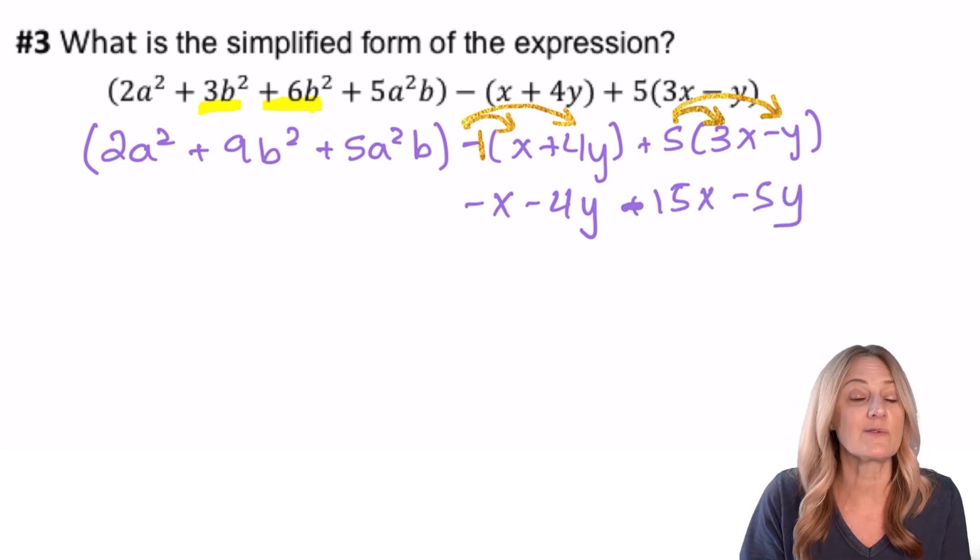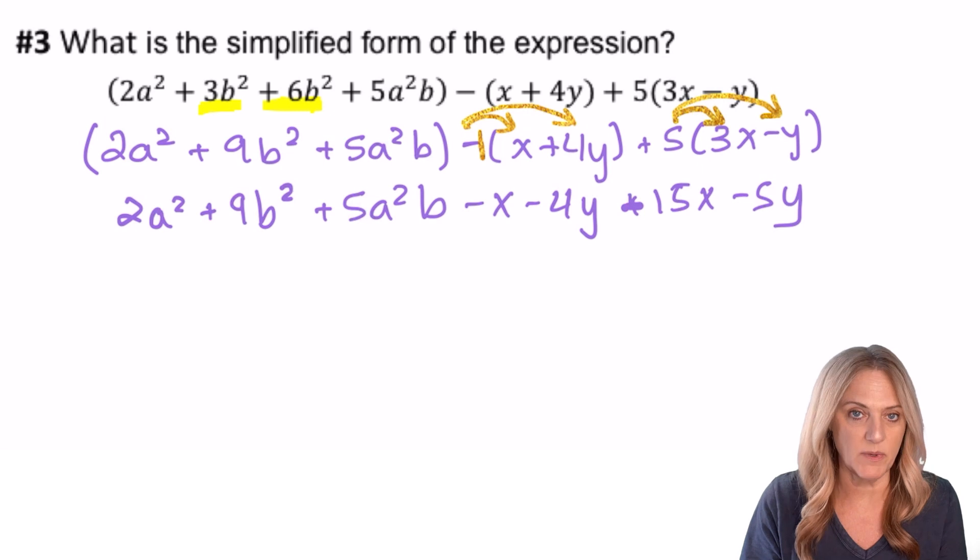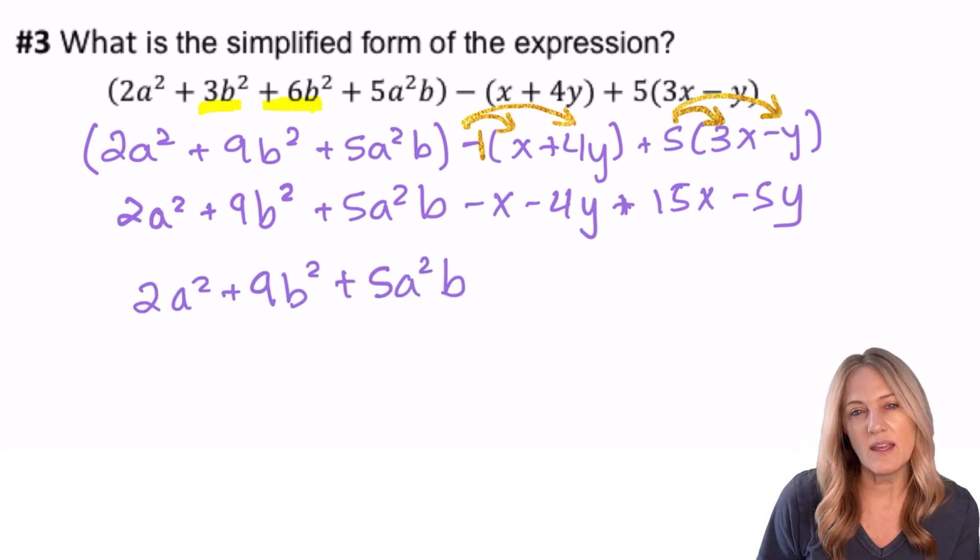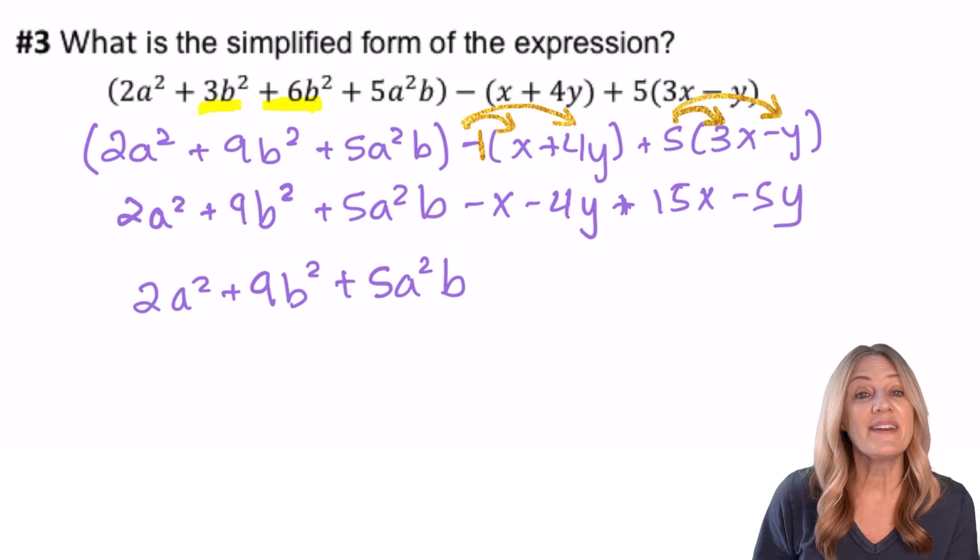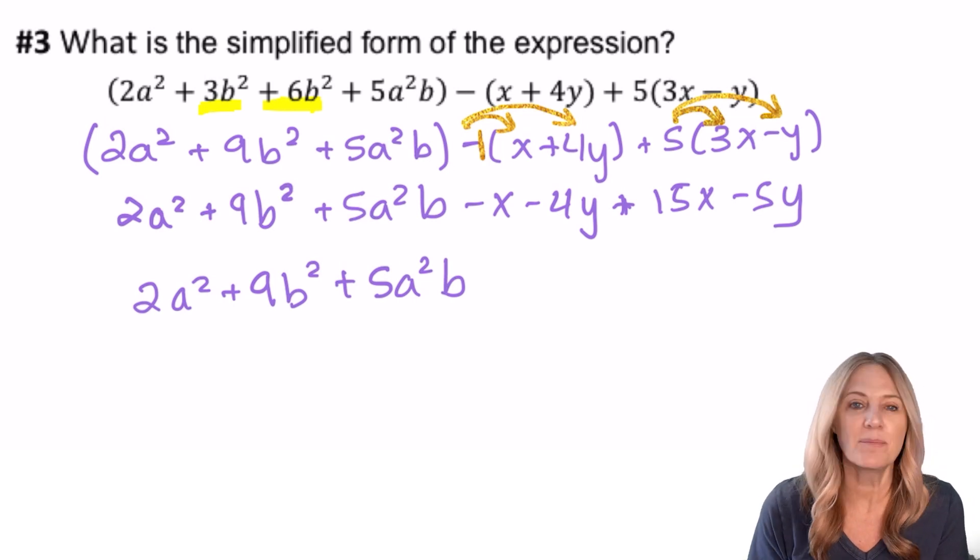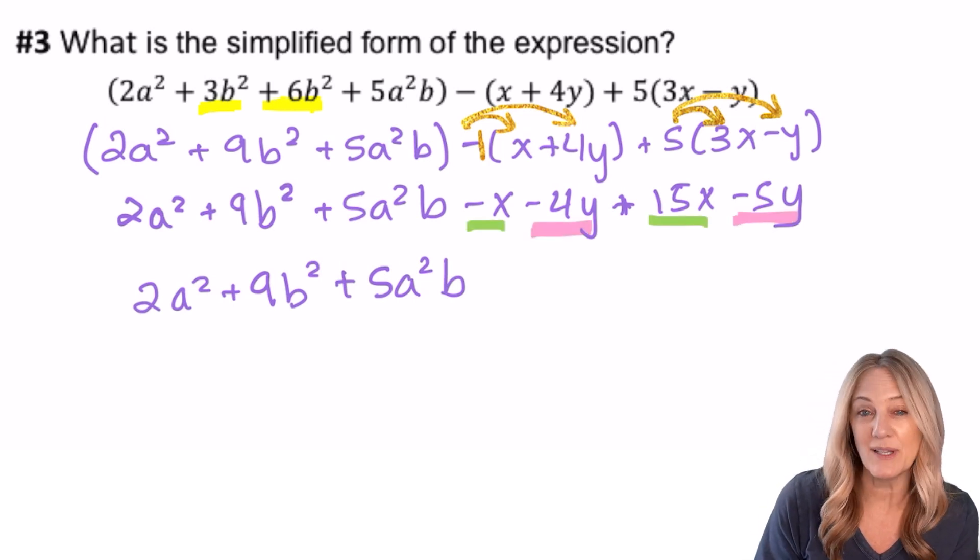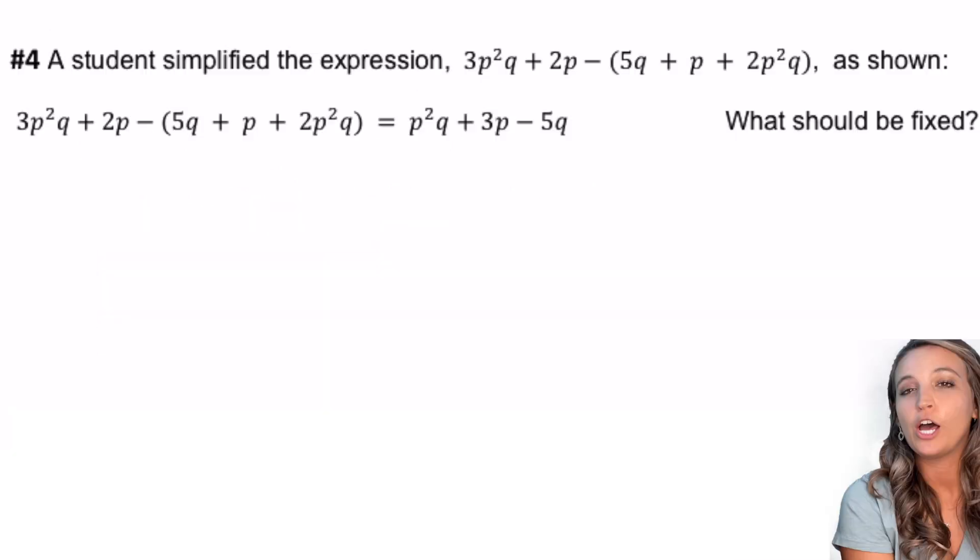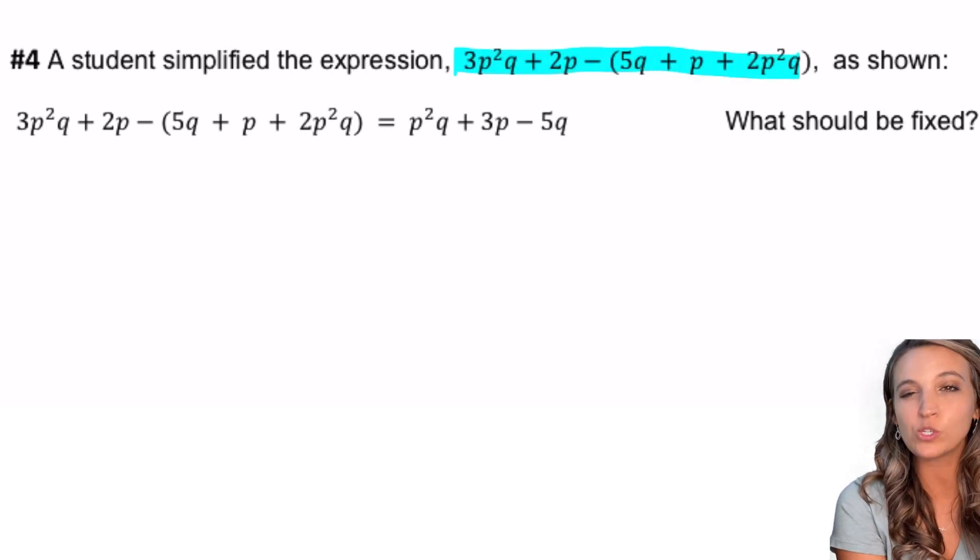We didn't have to be as careful there because it was a positive 5 that we were distributing. We've already simplified the terms that have a's and b's in them; they cannot be combined any further. But now we do have some x terms that can be combined and some y terms. So let's go ahead and do that, and we have our simplified version of the expression.